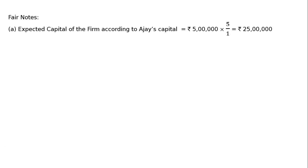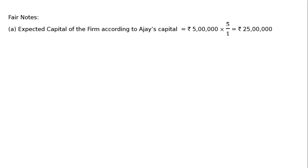Now, Working Note Part A: Expected capital of the firm according to Ajay's capital is equal to Rs. 5 lakh multiplied by 5/1, since Ajay was admitted for a one-fifth share and paid Rs. 5 lakh — that gives Rs. 25 lakhs. This is the expected capital. The actual capital of the firm is assets minus liabilities: Rs. 15 lakhs minus Rs. 5 lakhs, that is Rs. 10 lakhs.